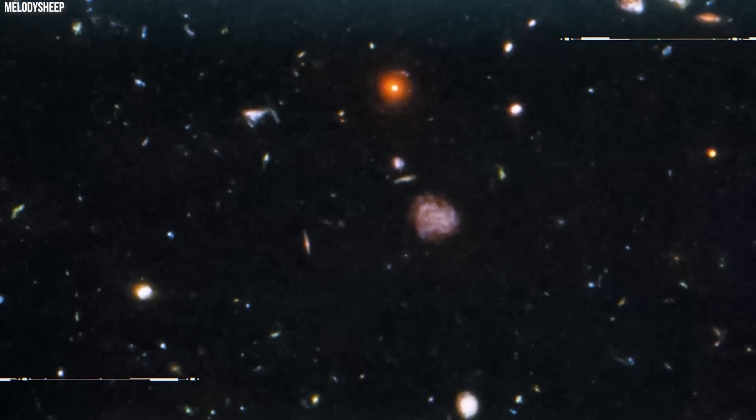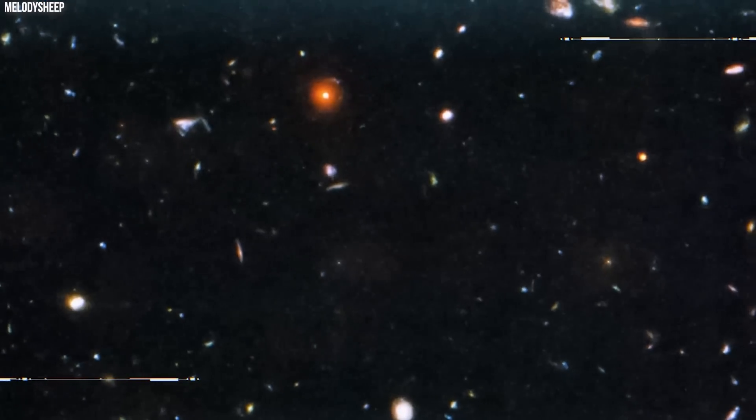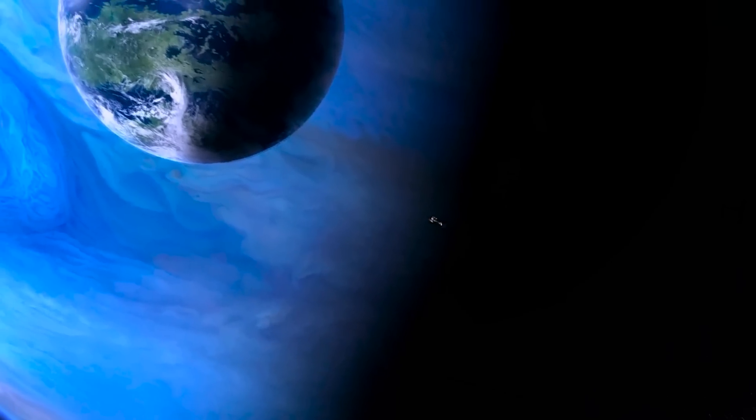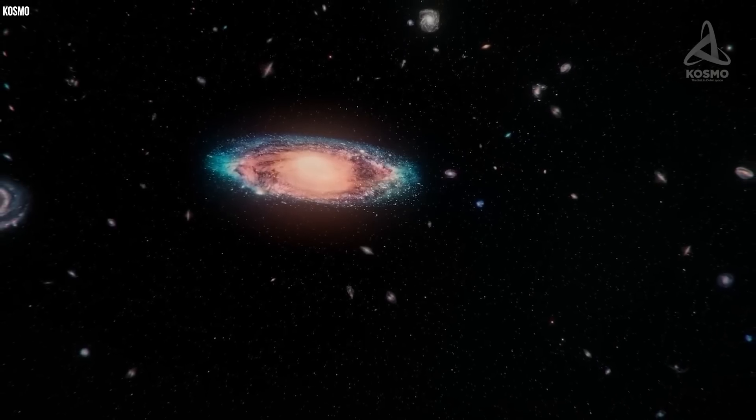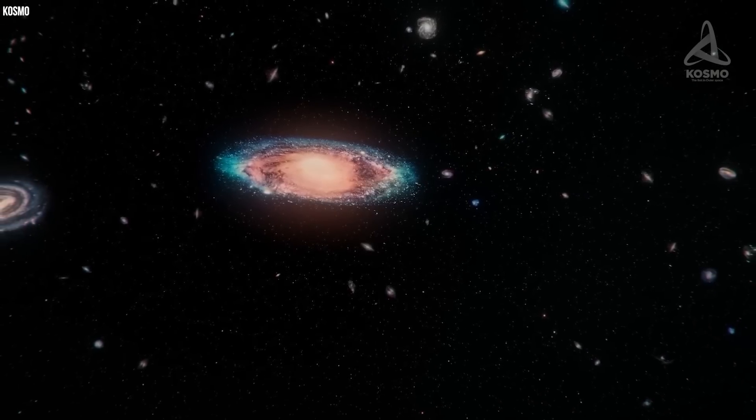Something so massive and alarming has been detected by astronomers that the galaxy we call home seems like a dwarf in comparison, and our solar system is probably like a grain of sand in relation to it.